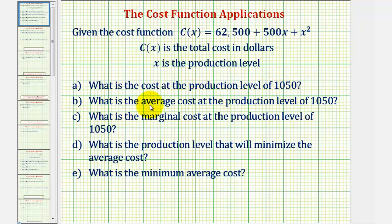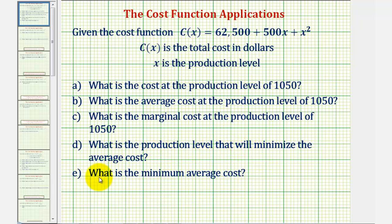Part B: what is the average cost at the production level of 1,050? Part C: what is the marginal cost at the production level of 1,050? Part D: what is the production level that will minimize the average cost? And Part E: what is the minimum average cost?